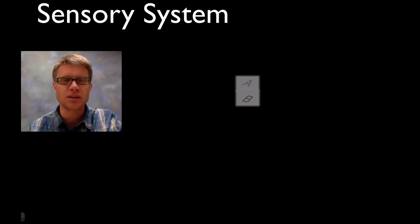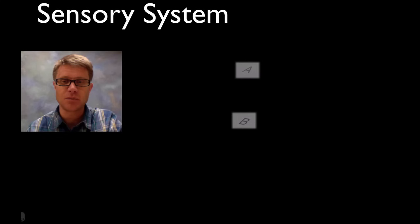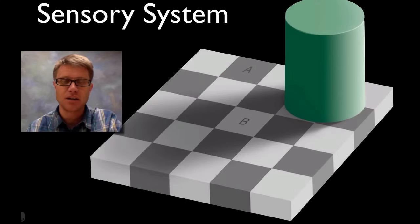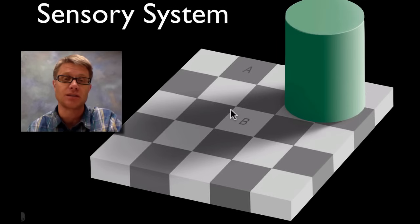Even though when they were together, let's move it back again, even though they're the same color of gray and your eye is receiving that color of gray, your brain is making sense of it. It's doing that because it realizes this is maybe in a shadow. Even though the sensory system brings action potentials to your brain, know that your brain can do a lot with it when it eventually gets there.